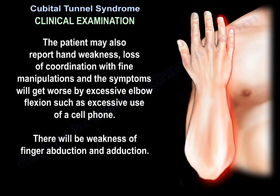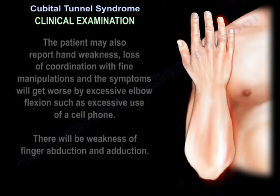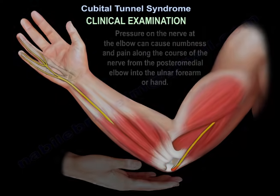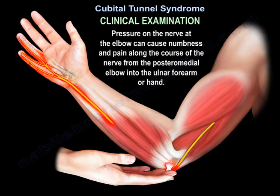There will be weakness of finger abduction and adduction. The patient may also have night symptoms, a weak or clumsy hand, and muscle wasting. Pressure on the nerve at the elbow can cause numbness and pain along the course of the nerve from the posteromedial elbow into the ulnar forearm or hand.